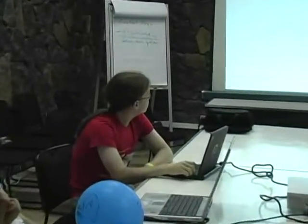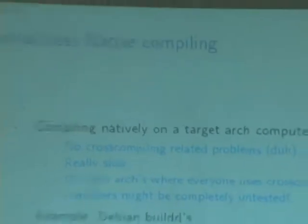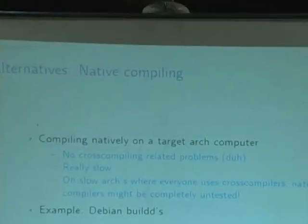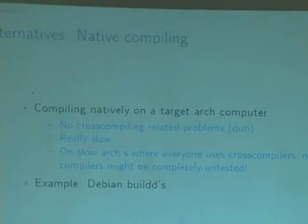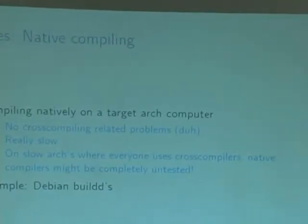There are some alternatives which are probably worth reviewing because people have probably already tried something else. Native compiling: the nice part is that you don't have to worry about cross-compiling problems at all — it just works. But it's really slow. And in case of some really slow architectures, it might be that no one has actually ever used that native toolchain. For example, one of the recent examples was trying to bootstrap the cell architecture — no one had probably run that test build because it didn't work.